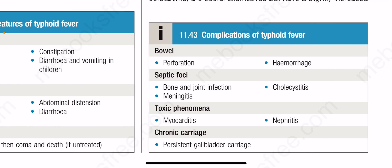Box 11.43 shows complications of typhoid fever: bowel perforation, hemorrhage, septic foci, bone and joint infection, meningitis, cholecystitis, toxic phenomena, myocarditis, nephritis, and chronic carrier state with persistent gallbladder carriage.